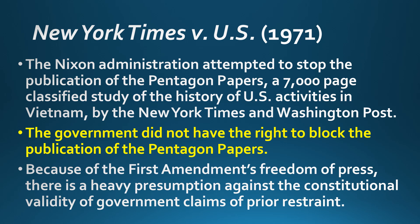New York Times v. U.S. is a freedom of the press case. The Nixon administration attempted to prevent the New York Times and Washington Post from publishing the Pentagon Papers — a 7,000-page document created by the U.S. Department of Defense detailing U.S. involvement in Vietnam. The Supreme Court ruled against the Nixon administration, saying they did not have the right to block the publication. Because of the First Amendment's freedom of the press, there is a heavy presumption against prior restraint — meaning censorship. This expanded freedom of the press.